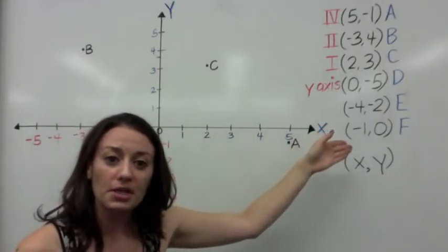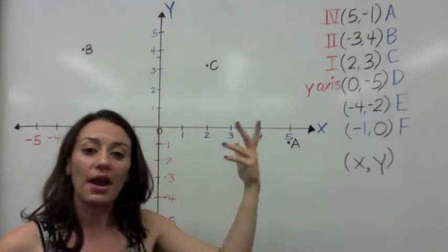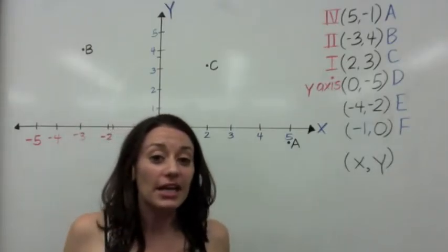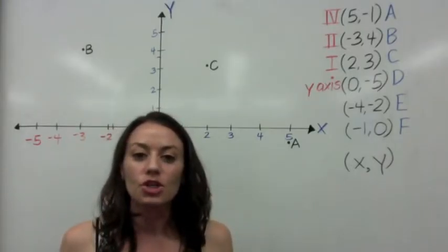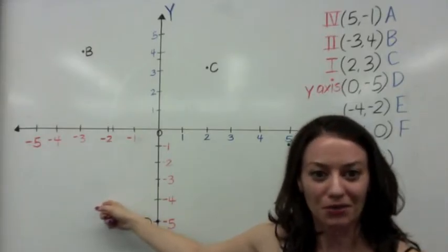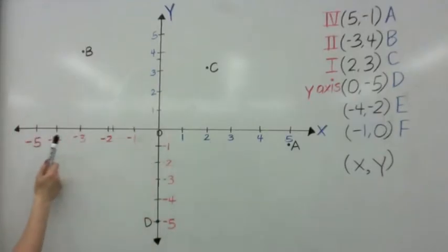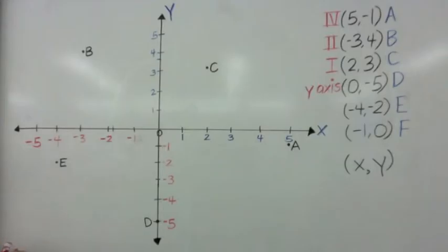We're going to do point E, where we have two negative values: x is negative 4 and y is negative 2. When you have a negative-negative combination, it does not make positive. You should know it is in quadrant 3. We have negative 4 and negative 2, so we start on the x-axis at negative 4, then go down to negative 2. We're going to call this point E.